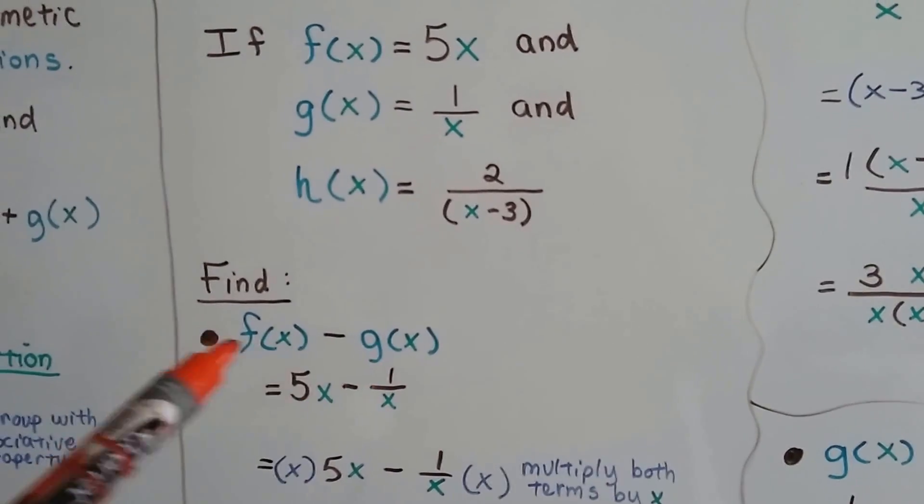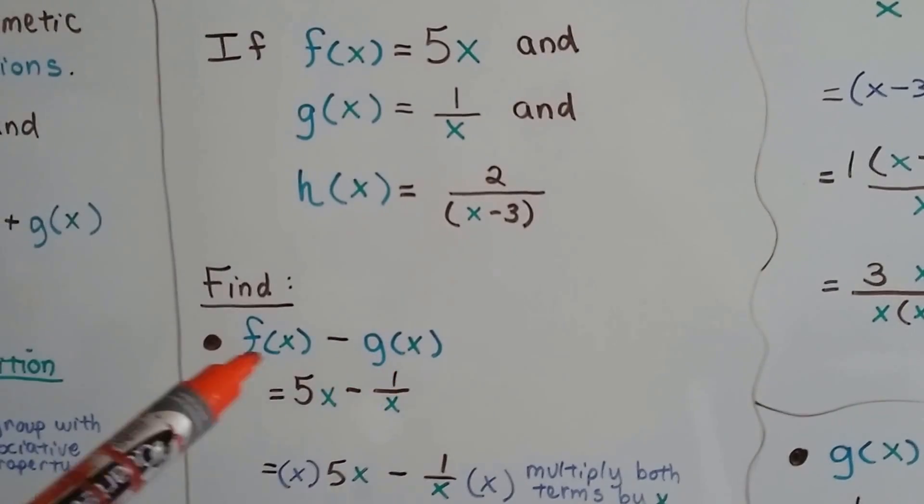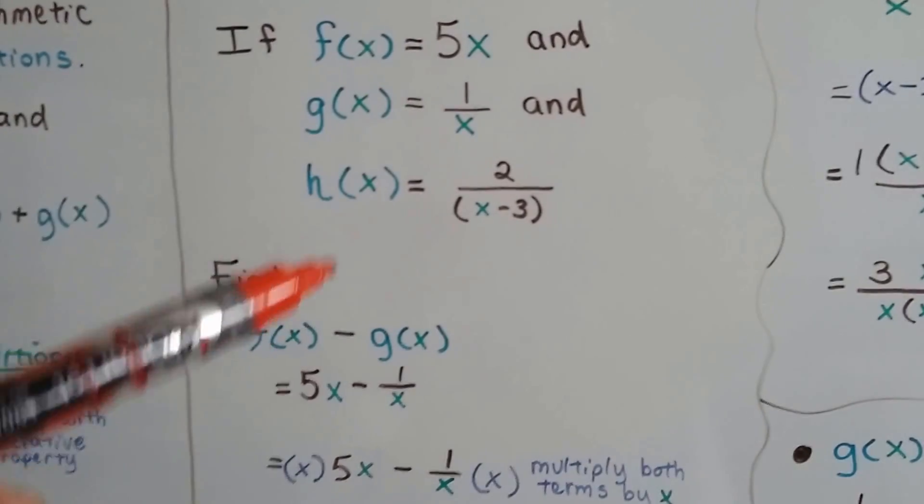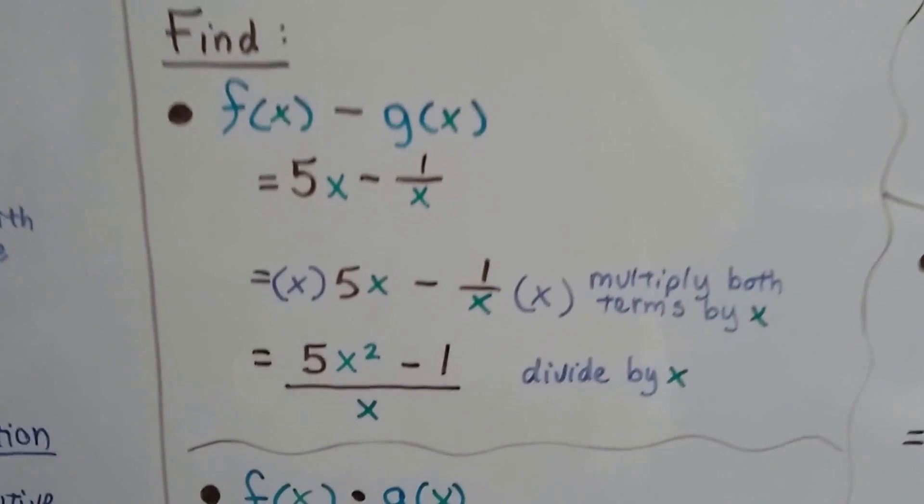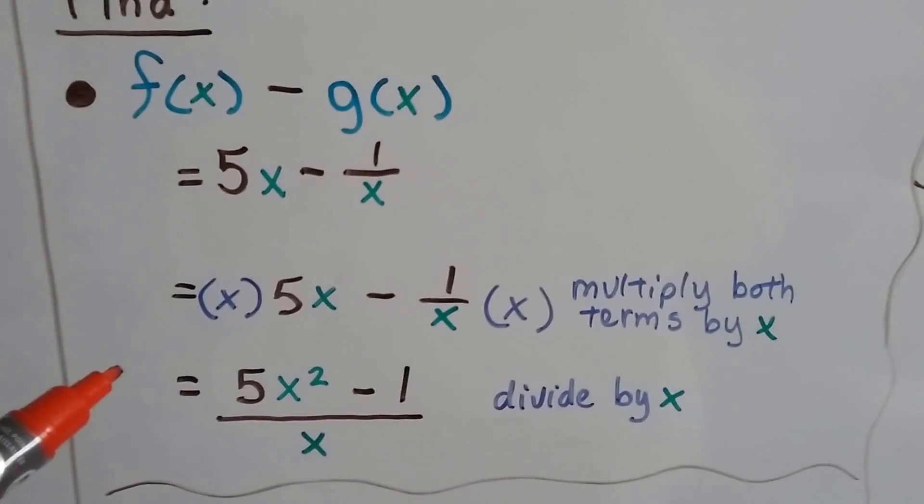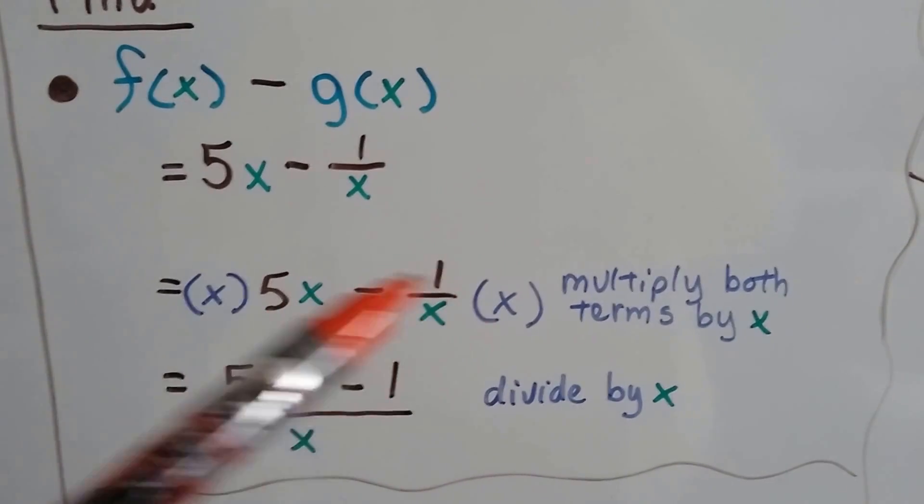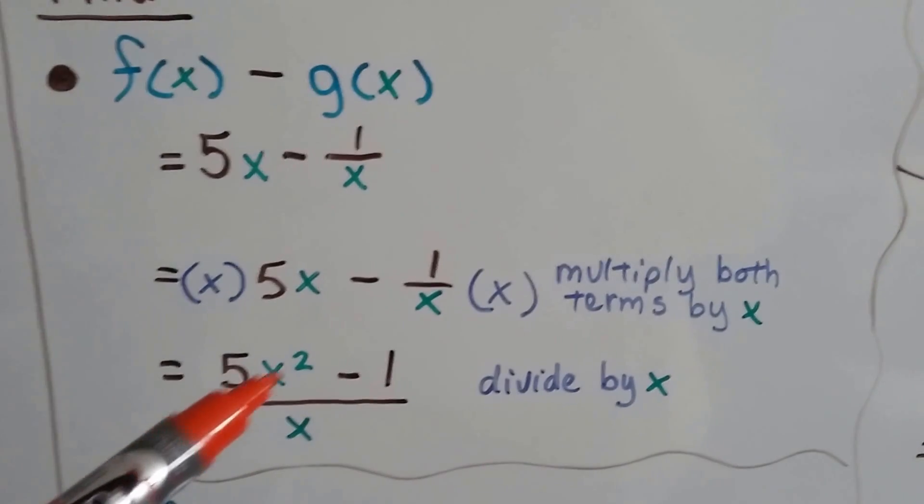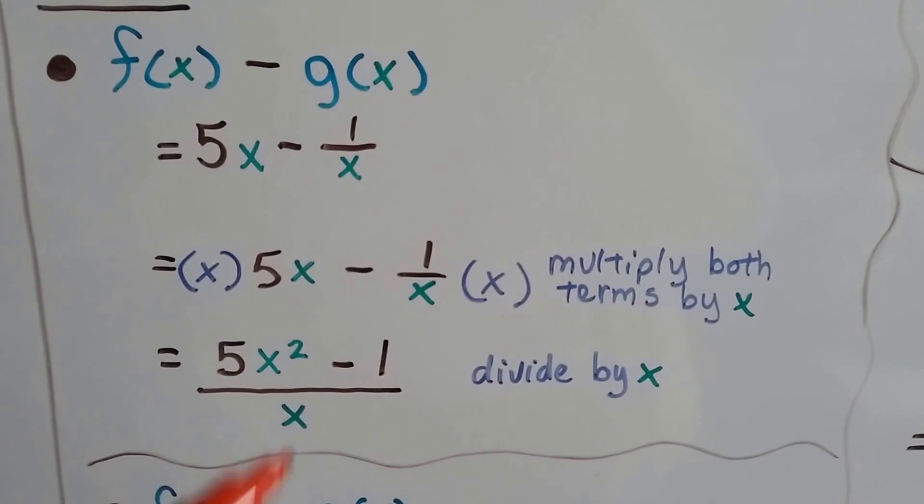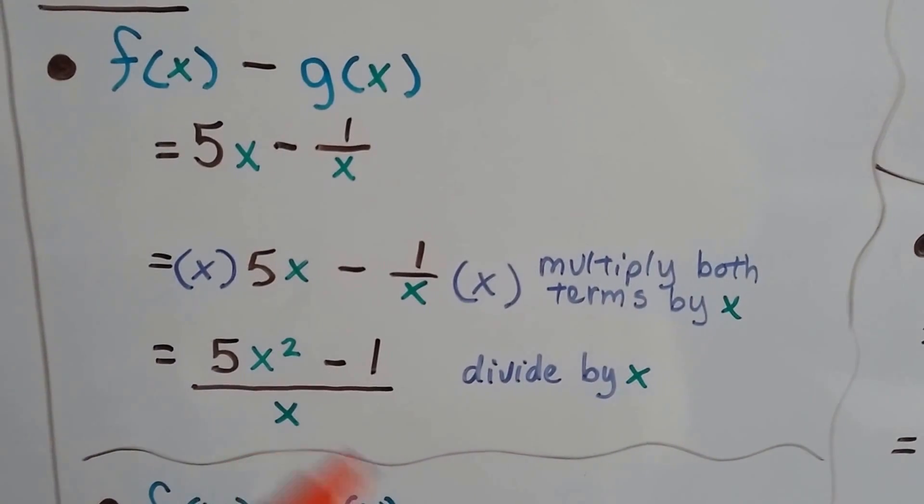So if we're going to do subtraction for these two, then we're going to have 5x minus 1 over x. All we have to do is multiply both of the terms by x. We get 5x squared minus 1 over x, divided by x.